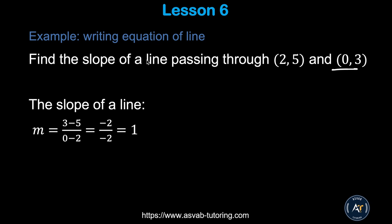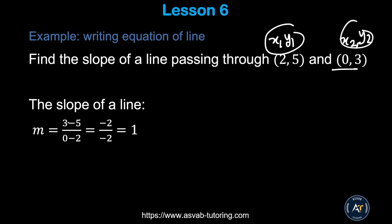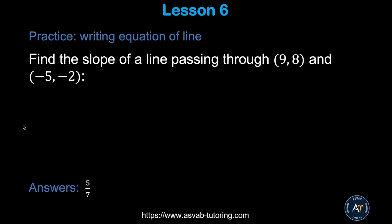Let's apply this formula. Find the slope of a line passing through (2, 5) and (0, 3). Label them x1, y1 and x2, y2. Plug in the values: (3 − 5) / (0 − 2) = −2 / −2 = 1. So m = 1. That is the slope of this line.